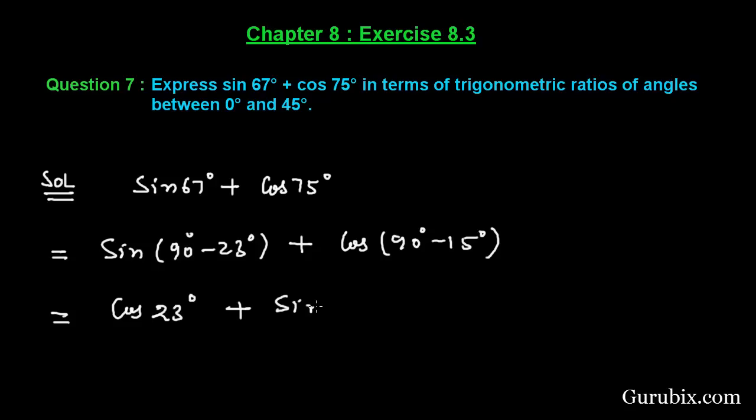We have applied the formulas: sin(90° - θ) = cos θ and cos(90° - θ) = sin θ. You can observe that 23° and 15° are between 0° and 45°.